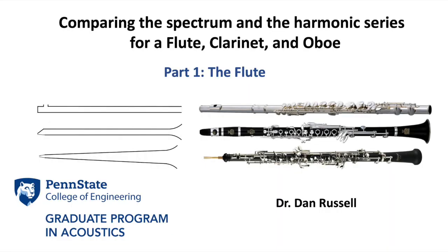So a flute, which is an open-open cylinder, allows all of the integer multiples in the harmonic series to be present, and one can actually play the harmonic series by blowing a little bit harder or changing the attack angle in the embouchure. In part two of this series, I take a look at a clarinet, which is a closed-open cylinder and only allows the odd-integer multiples of the fundamental — the odd-integer harmonics — to be present. In part three, I take a look at an oboe, which is a closed-open cone. A cone allows all of the integer multiples to return, except they're not equally weighted, so it sounds quite a bit different than a flute because of the timbre — the shaping of the integer multiples in the harmonic series.